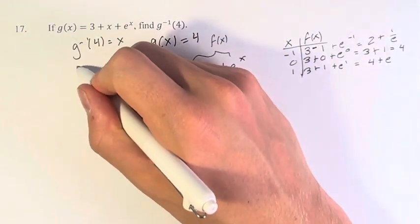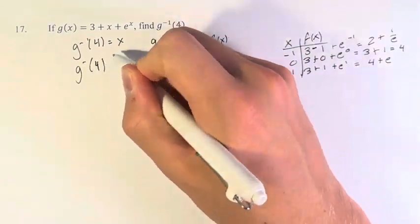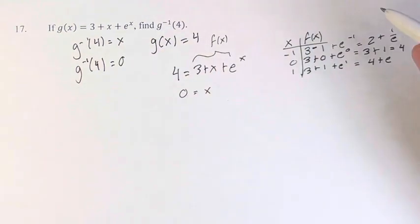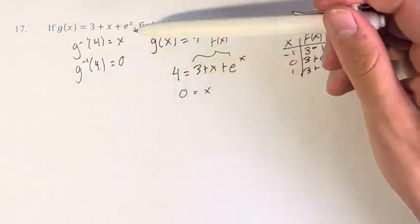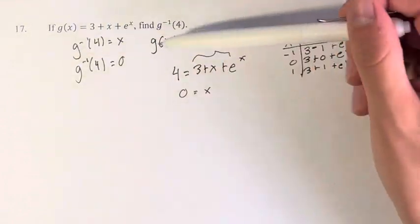Therefore, since g inverse of 4 equals x, it must equal 0. And we know that this is the only solution, because for a function to have an inverse, it must be 1 to 1.